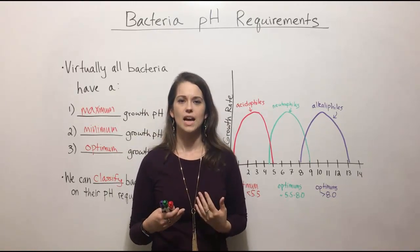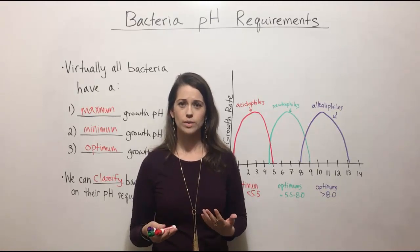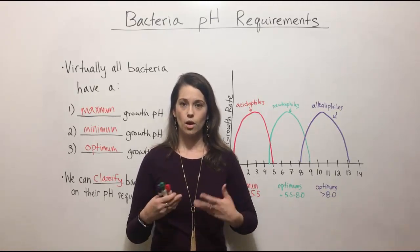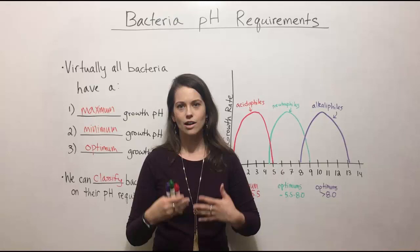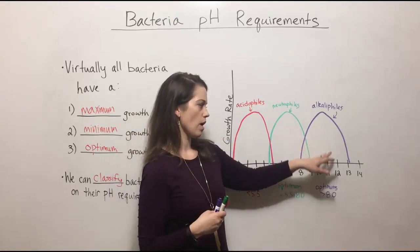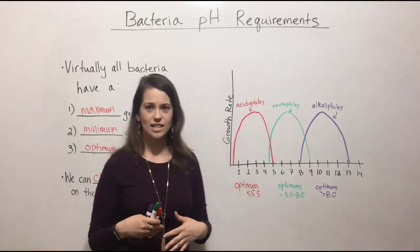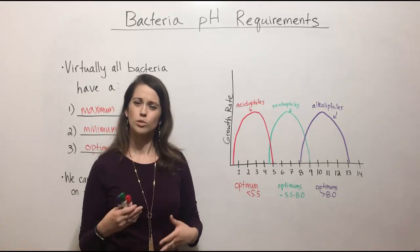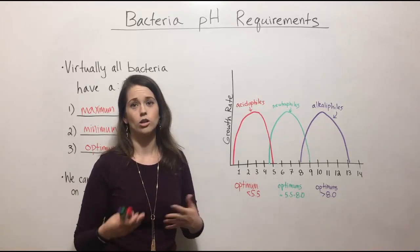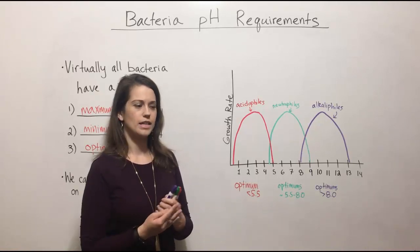We have to ingest something on the order of a hundred thousand of the Vibrio cholerae bacteria in order to actually get cholera. And that's because they really thrive more at this higher pH. And so when we ingest them, they're no longer at their optimal growth pH. So it takes quite a large dose to actually get sick with that particular type of bacterium.